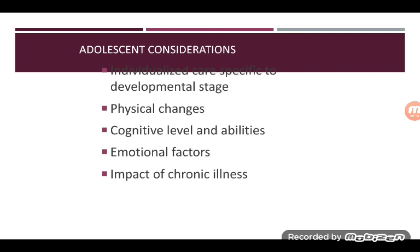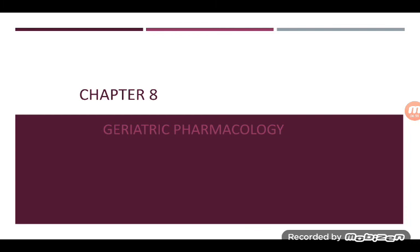Adolescent considerations require individualized care very specific to developmental age. Physiological changes and cognitive levels and abilities can vary quite a bit within the adolescent continuum. Emotional factors — particularly the rebellion of adolescence — make it tough to develop trust and create better adherence. There is also the impact of chronic illness on an adolescent to consider.